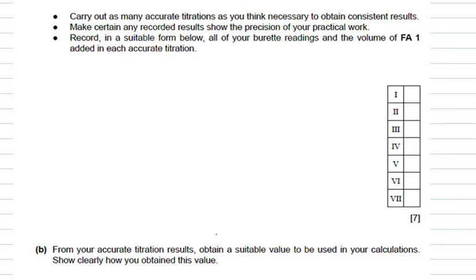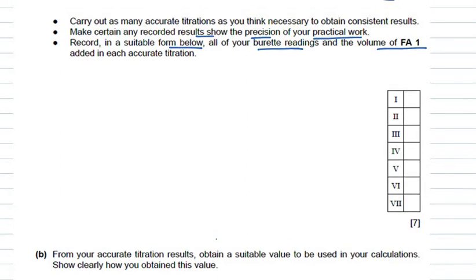Next, the question says carry out as many accurate titrations as necessary to obtain consistent results, making certain that recorded results show the precision of your practical work. Record in a suitable form all burette readings and the volume of FA1 added in each accurate titration. I recommend that a minimum of five accurate readings should be noted down, even if you are getting two correct readings very close to each other.